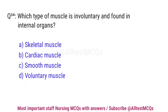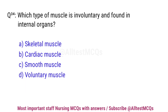Question number 34. Which type of muscle is involuntary and found in internal organs? The correct option is C: Smooth muscle.